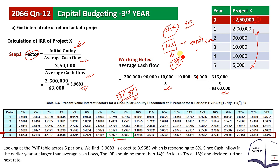Looking at the PVIFA table across 5 periods, we find 3.9683 is closest to 3.9683, which corresponds to approximately 8%. Since the earlier year cash flows like 2,9,000 and 2,5,000 are uneven, we use individual PVIF factors. We already have a positive NPV at 14%. We then try 18% and get a negative value, so IRR lies between 14% and 18% — a 4% difference.